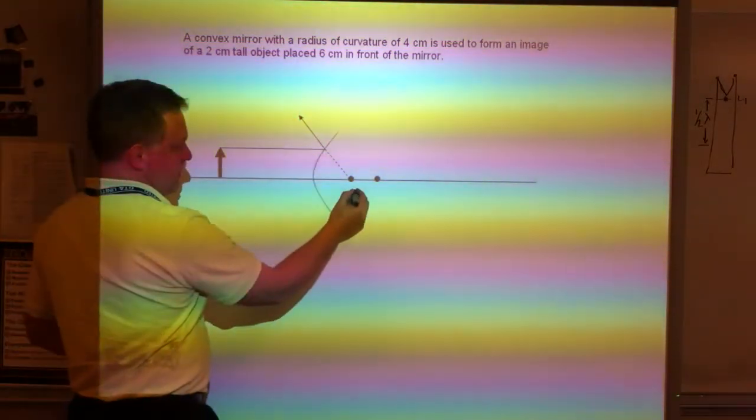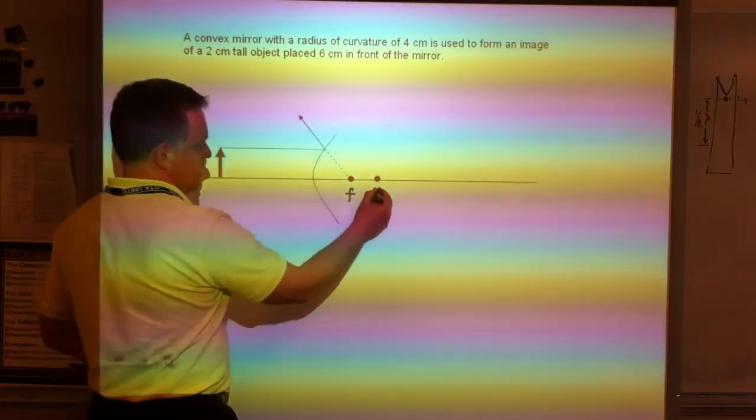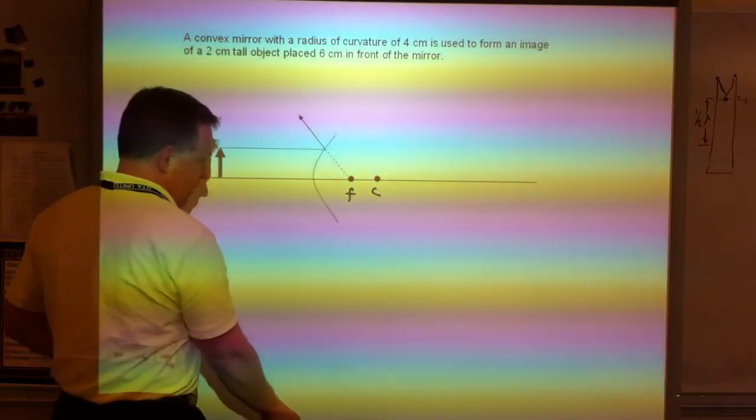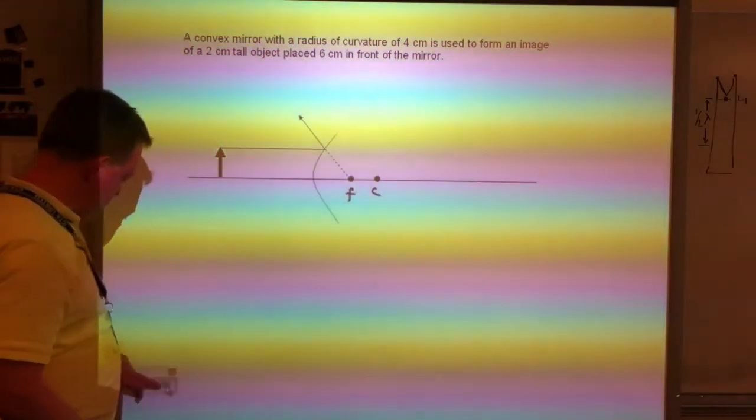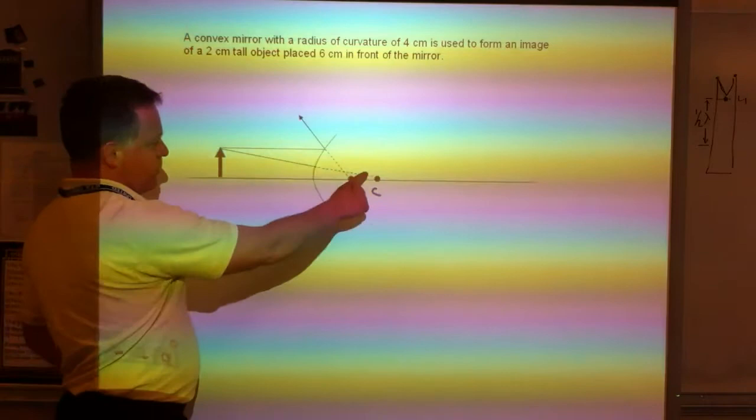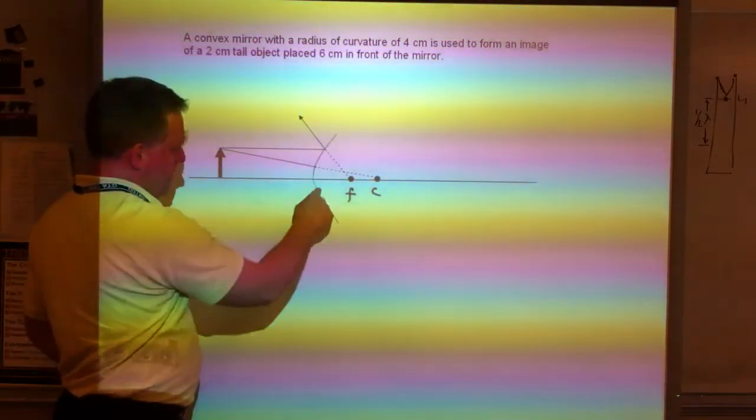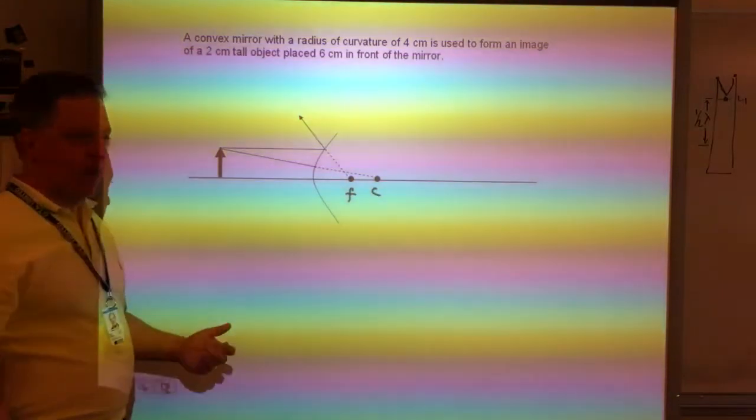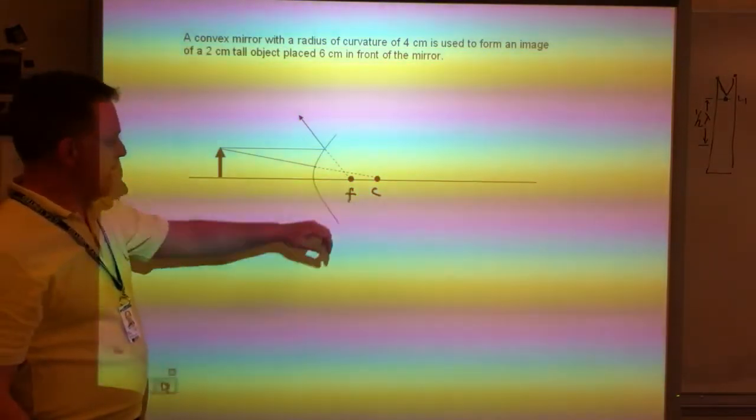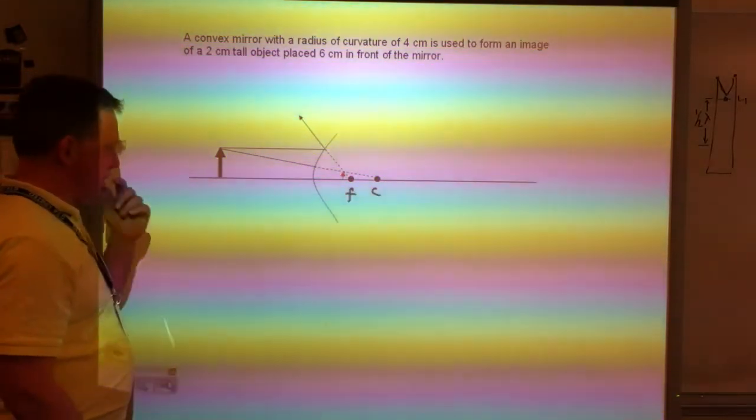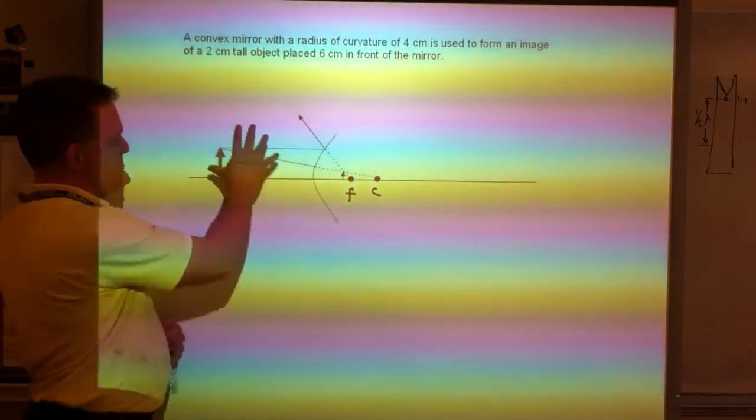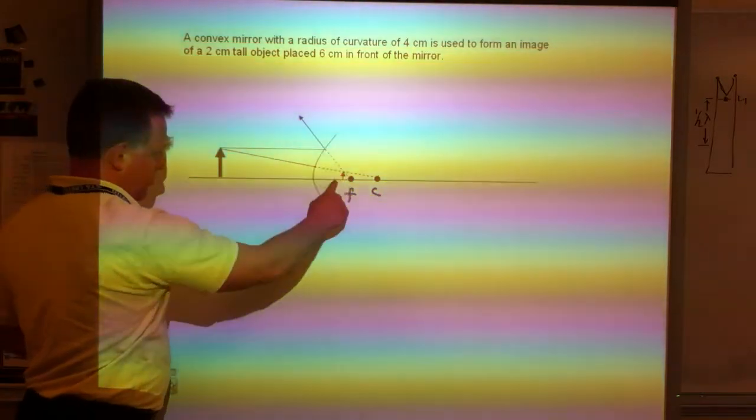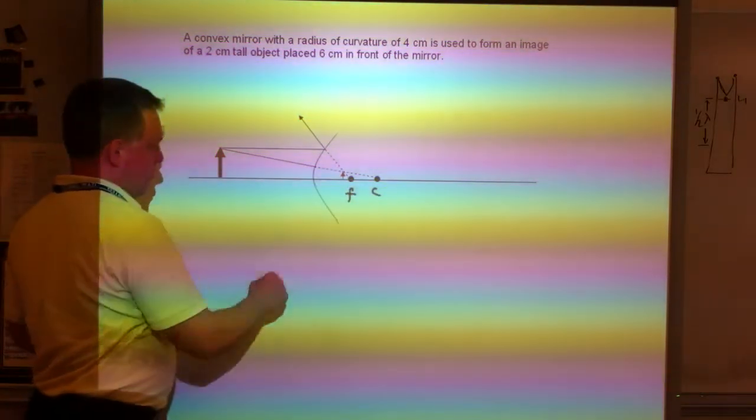This is the focus, and this is the center. The center is the center of this circle, and the focus is halfway to the center. Our next ray, we would draw straight towards the center. You can't get there because the mirror's in the way, but it's going to go straight down this way, then bounce straight back. Where do they meet? They're meeting back here behind the mirror. So my image looks like this. And no matter where I put this object, I'm always going to end up with a small, upright image over here.